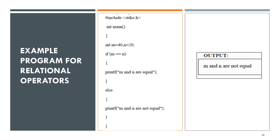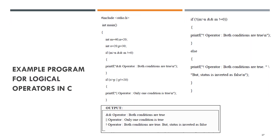Next, an example of a program using relational operators to compare whether the value of m is equal to n. Next, an example of a program using logical operators — logical AND, logical OR, and NOT.